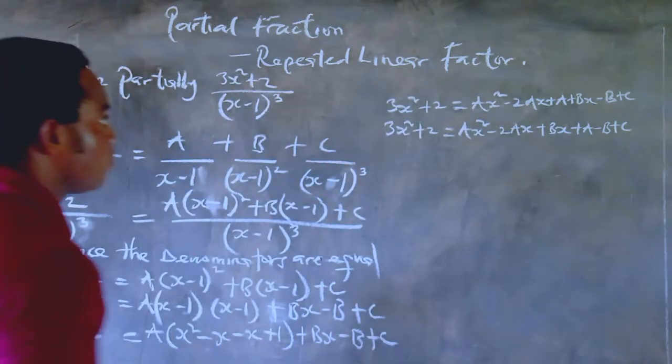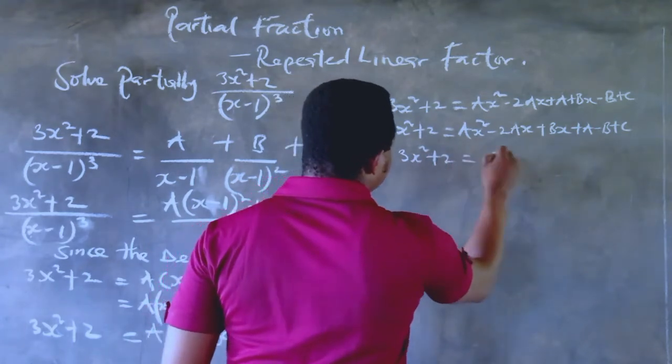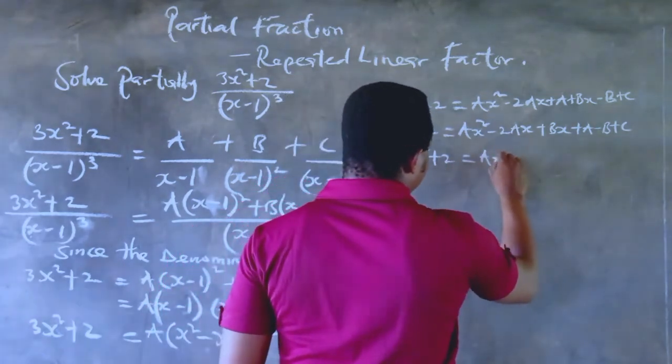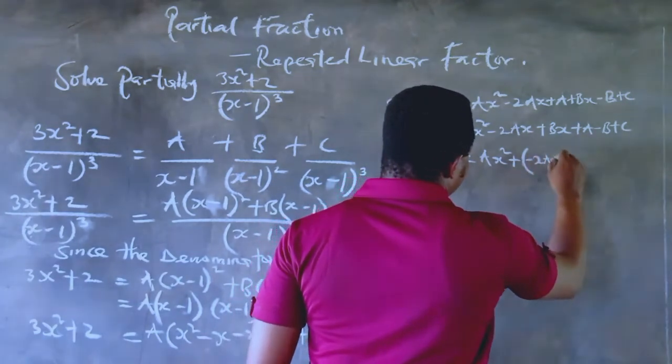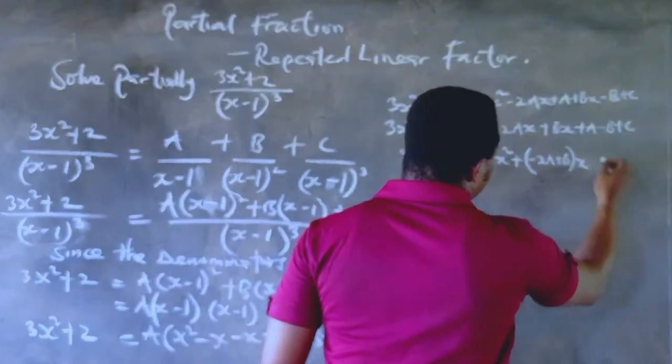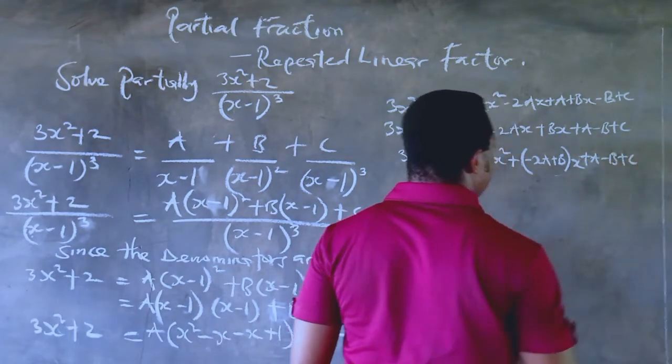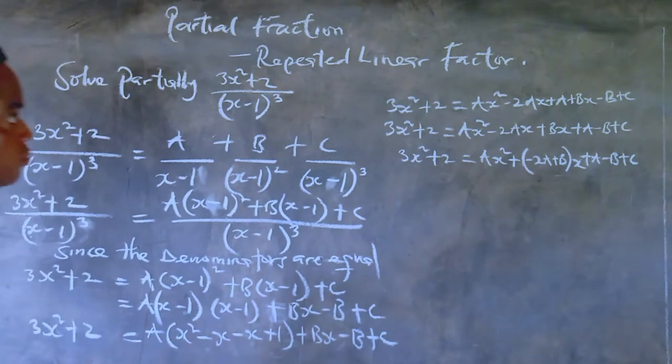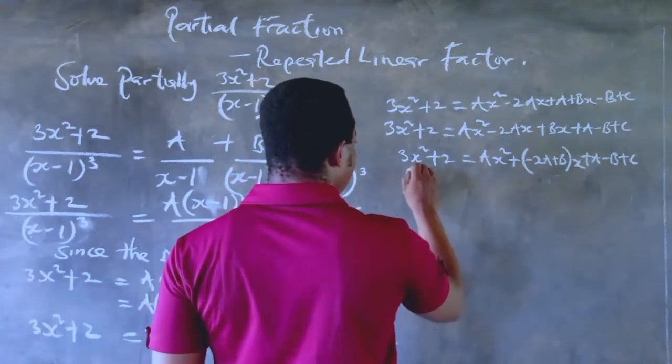Now we've written it in a way that it would be easy for us to factorize this component to make it comparable to the other side. So we have Ax squared plus (-2A plus B)x and (A minus B plus C). So at this point, you will notice that we can compare the left-hand side and the right-hand side.